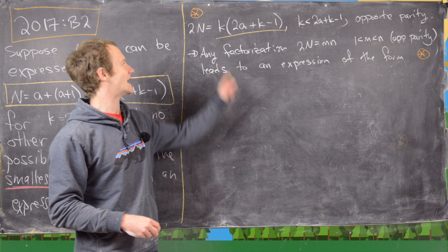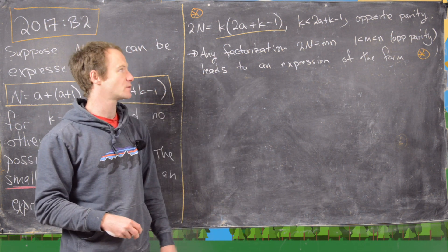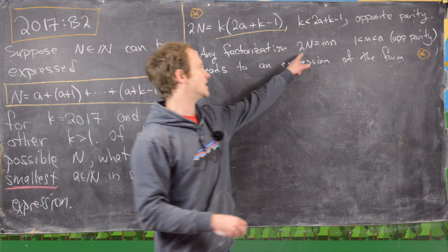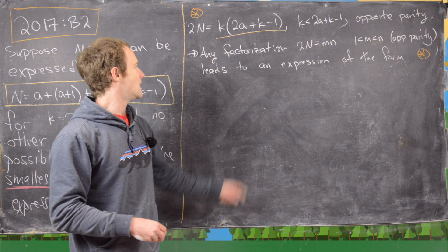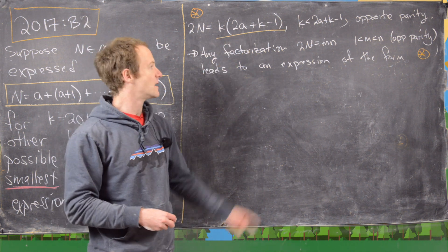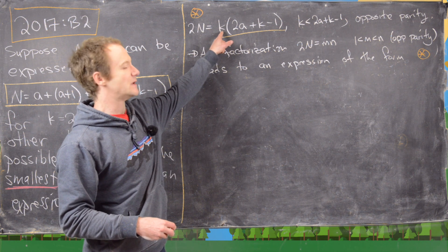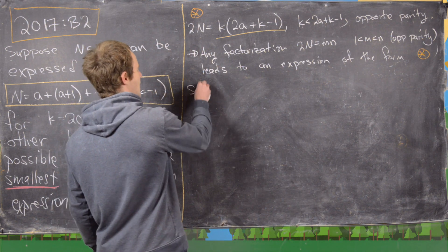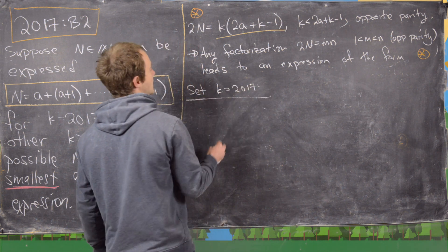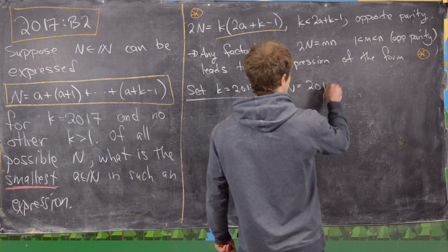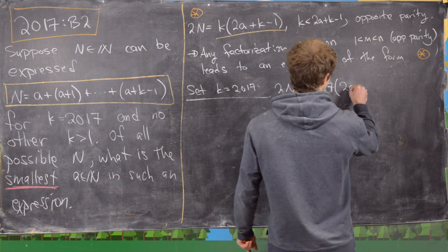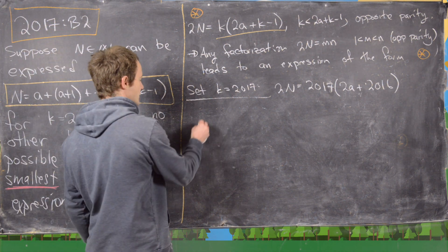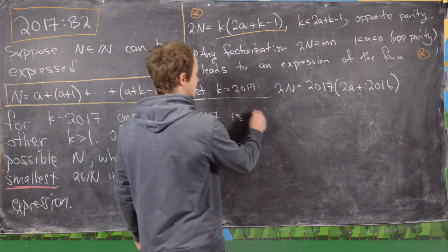To summarize: we've written 2n as k times the quantity 2a plus k minus 1, where k is less than 2a plus k minus 1 and they have opposite parity. Any factorization of 2n as m times n leads to an expression of this sum form. But we want this expression to be unique for k equals 2017. So we set k equal to 2017, giving us 2n equals 2017 times the quantity 2a plus 2016.